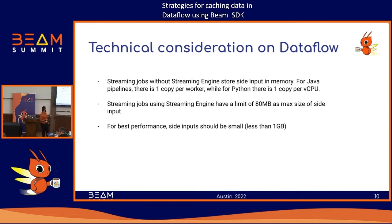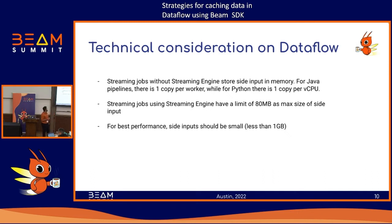For streaming jobs using Streaming Engine, there is a maximum limit of 80 MB, so your side input cannot exceed 80 MB. For any pipeline, we recommend the side input size be fairly small — typically less than 1 GB — to get decent performance.